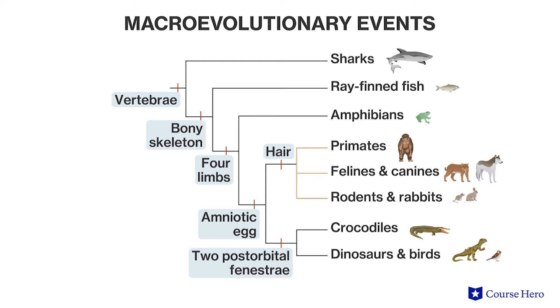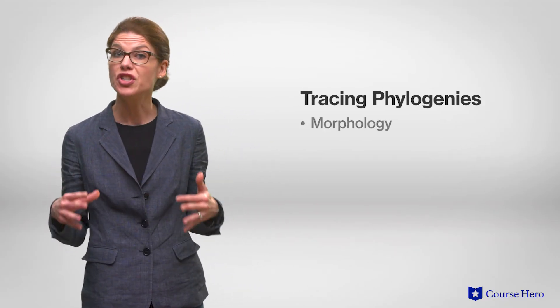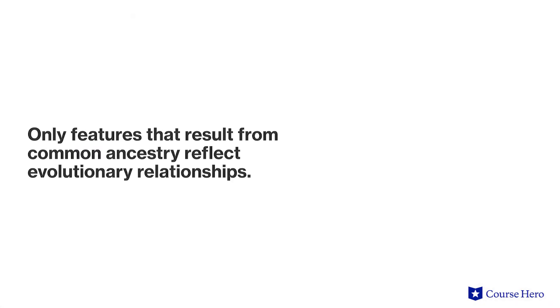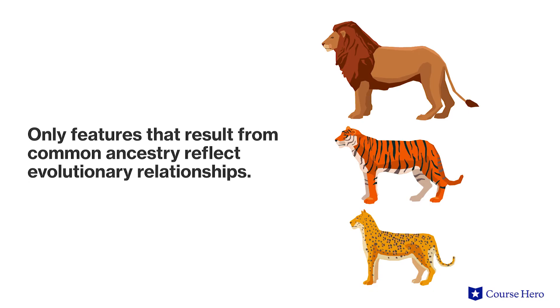However, the appearance of felines and canines on the same branch of a phylogenetic tree does not imply that one genus is more or less advanced than another. The evolutionary stage is equal and would be presented as such on a phylogenetic tree. When tracing phylogenies, biologists must gather as much information as possible about the morphology, genes, and biochemistry of relevant organisms. Only the features that result from common ancestry reflect evolutionary relationships and are used for building phylogenetic trees. Thus, the first step when creating a phylogenetic tree is to distinguish homologous from analogous structures.